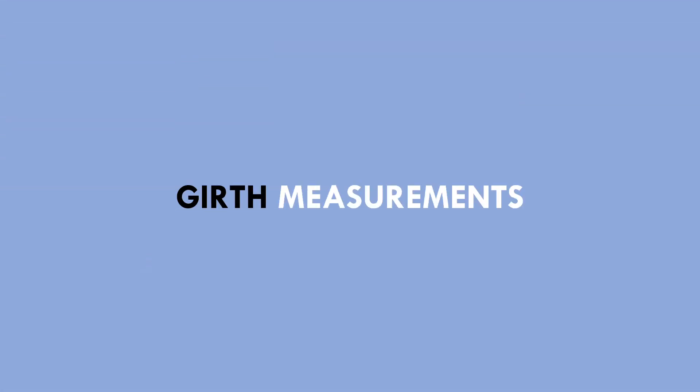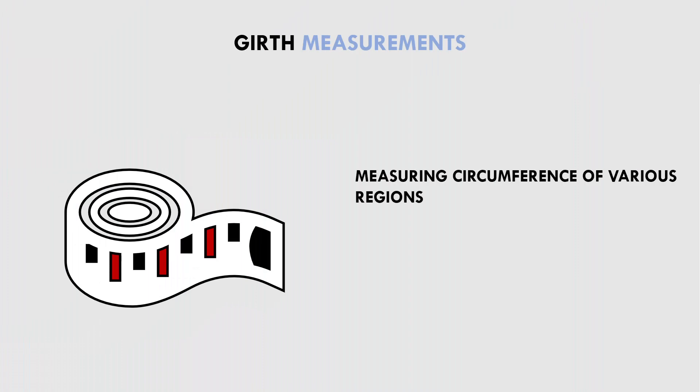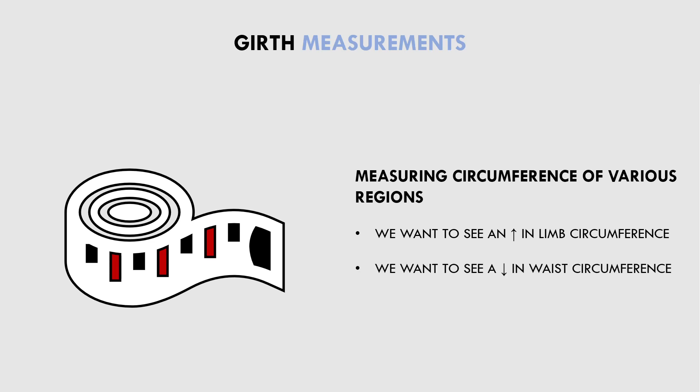The next form of assessing body composition is using girth measurements. This refers to measuring the circumference of various regions of the body — we can measure the circumference of the arms, legs, calves, waist, hips, and more. These girths can give us a general indicator of our body composition, and should once again be assessed at similar body weights, because the amount of body fat we have will influence these results too. The general consensus is that we should see an increase in the circumference of the muscles we are trying to grow and generally a reduction or maintenance in waist circumference. So if we have an increase in arm and thigh circumference and a decrease in waist circumference at the same body weight, this should indicate an improvement in body composition.